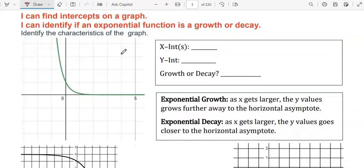Identify the characteristics of this graph. The x-intercept is when it crosses the x-axis. It actually never crosses it. It looks like it's about to touch it, but it doesn't actually go through it here. So we're going to put none.